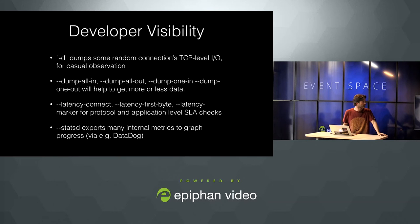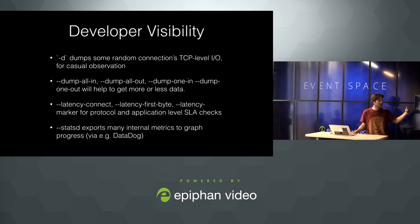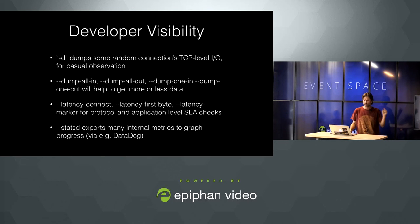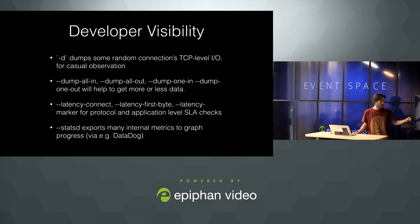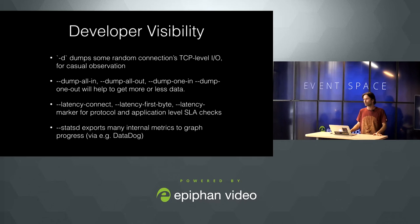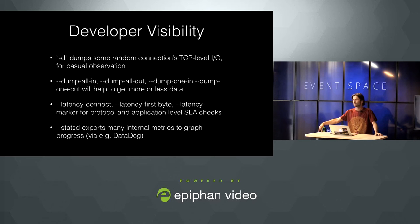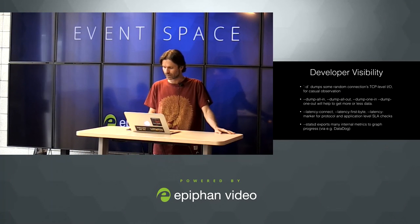The next problem is developer visibility. We have different types of dumps: we can dump all the data coming into all connections, going out of those connections, or dump data from any single random connection. Internally TCP-cali uses histograms to figure out 99th percentile and 99.5th percentile latencies. You can specify in the command line what kind of percentile latencies you need, and it computes and shows those percentile latencies, allowing you to check whether your code is consistent with your SLA.